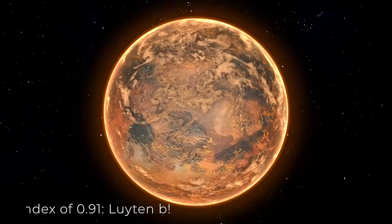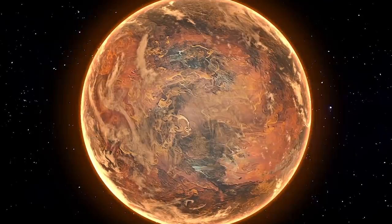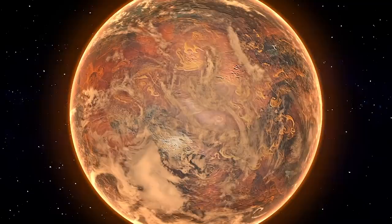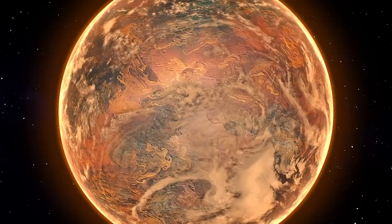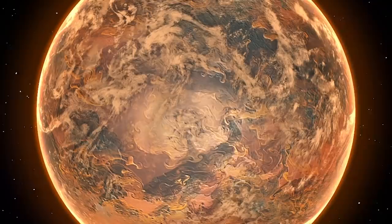5th place, with an Earth Similarity Index of 0.91, Luyten b. Luyten b is a rocky exoplanet orbiting within the habitable zone of the nearby red star, Luyten's star, in the constellation Canis Minor, just to the right of the bright star Procyon. With a visual magnitude of 9.9, it's too faint to be viewed with the unaided eye. Luyten b is one of the most Earth-like planets ever found, and is the fifth closest potentially habitable exoplanet known at a distance of 12.2 light-years.